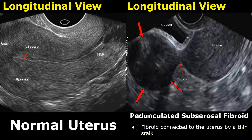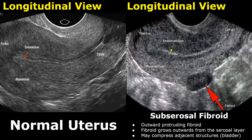Here is another image. We can see a small fibroid protruding outwards from the uterine wall, so this is a subserosal fibroid.